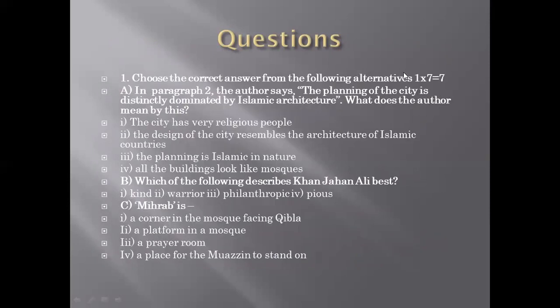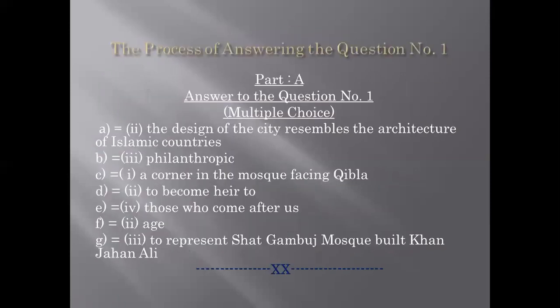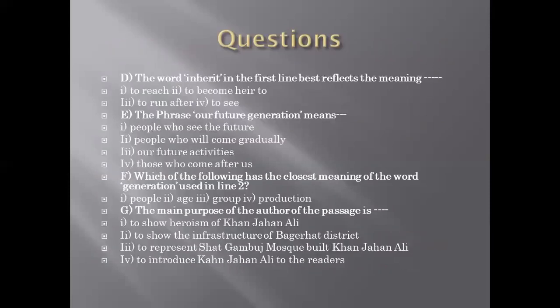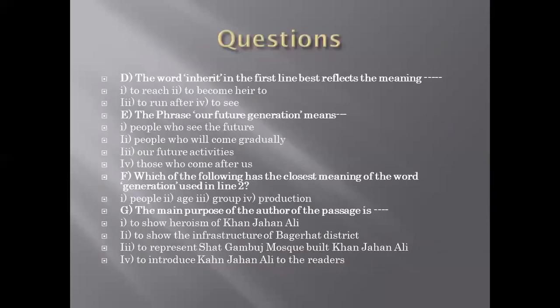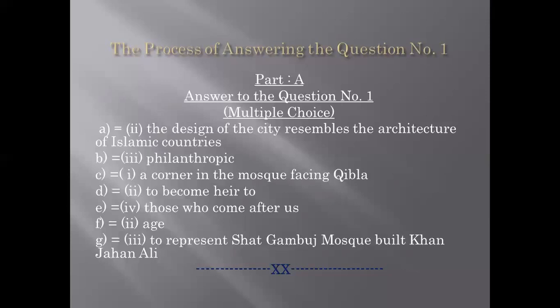Next, question c: 'Mihrab is a corner in the mosque facing Qibla / a platform in a mosque / a prayer room / a place for the muezzin.' The best answer is the first option — a corner in the mosque facing Qibla, so c = first option. Next, question d: the word 'inherit' in the first line best reflects the meaning — to reach / to become yours / to run after / to see. The best answer is the second option: 'to become yours.' For question e, the phrase 'our future generation' means — those who come after us — which is the fourth option.